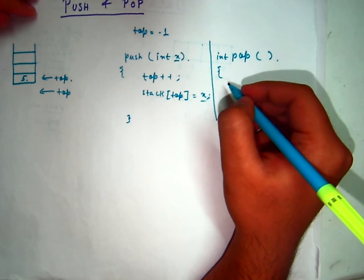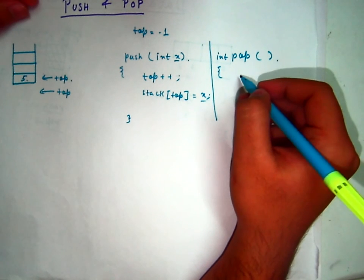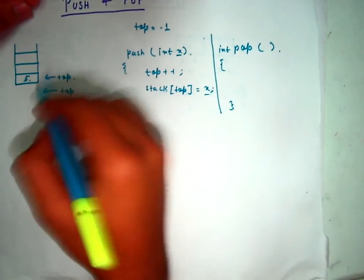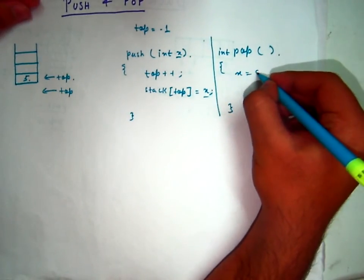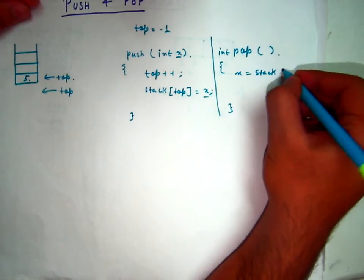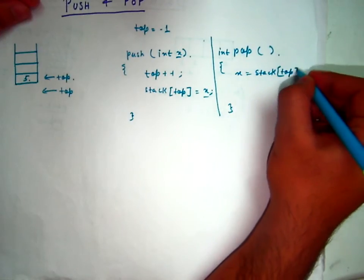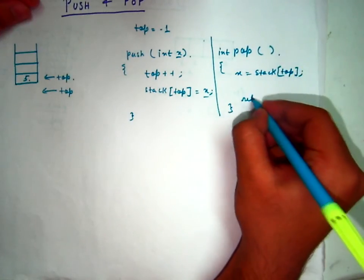Now what we have to do in the pop function is take out the value from the stack. So let's take the current value out of the stack and return that value.